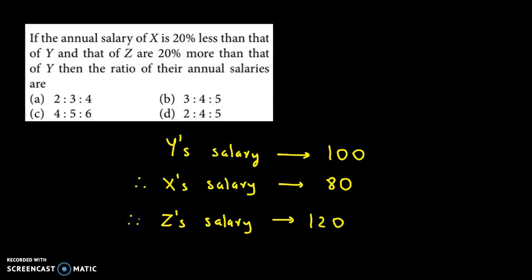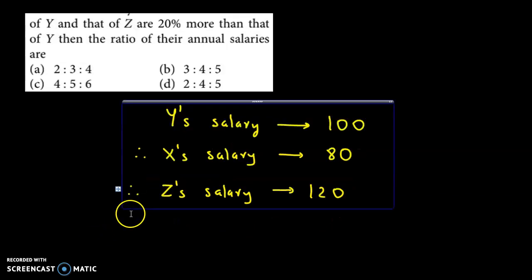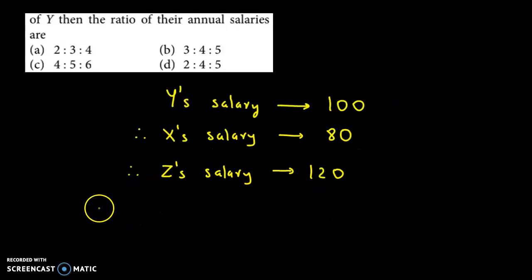And now we need to find the ratio of all three, that is X is to Y is to Z. This ratio will be: first X comes, so here it will be 80, then Y is 100, and Z's salary is 120.